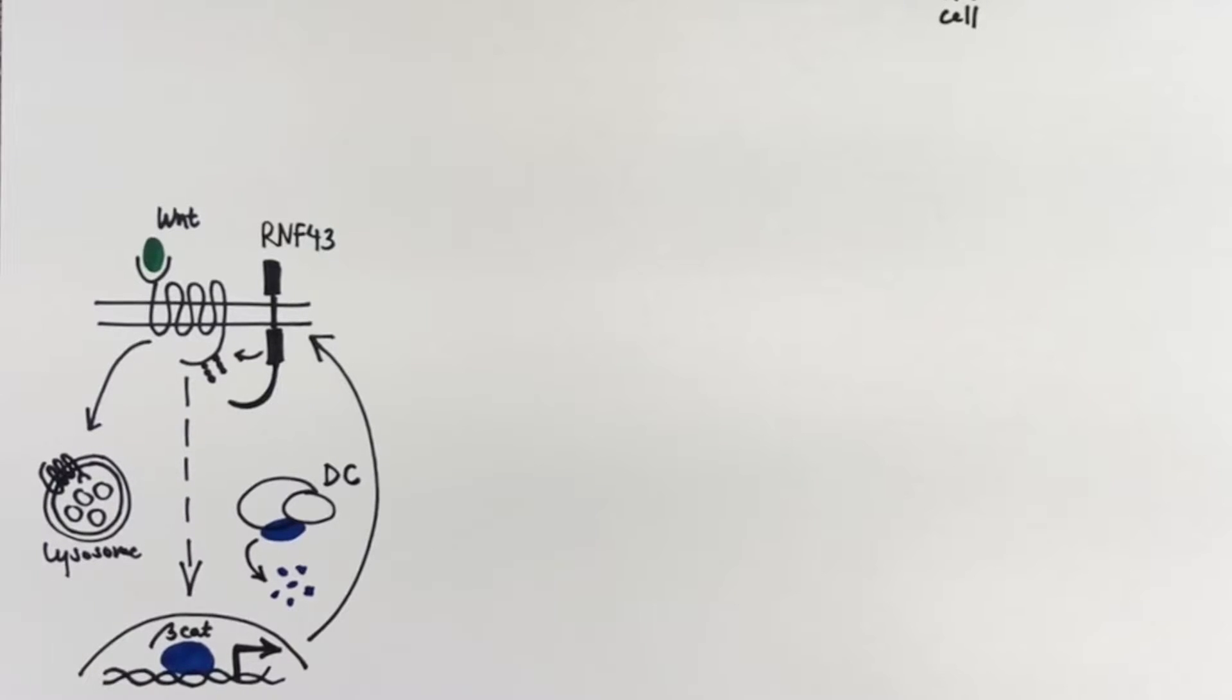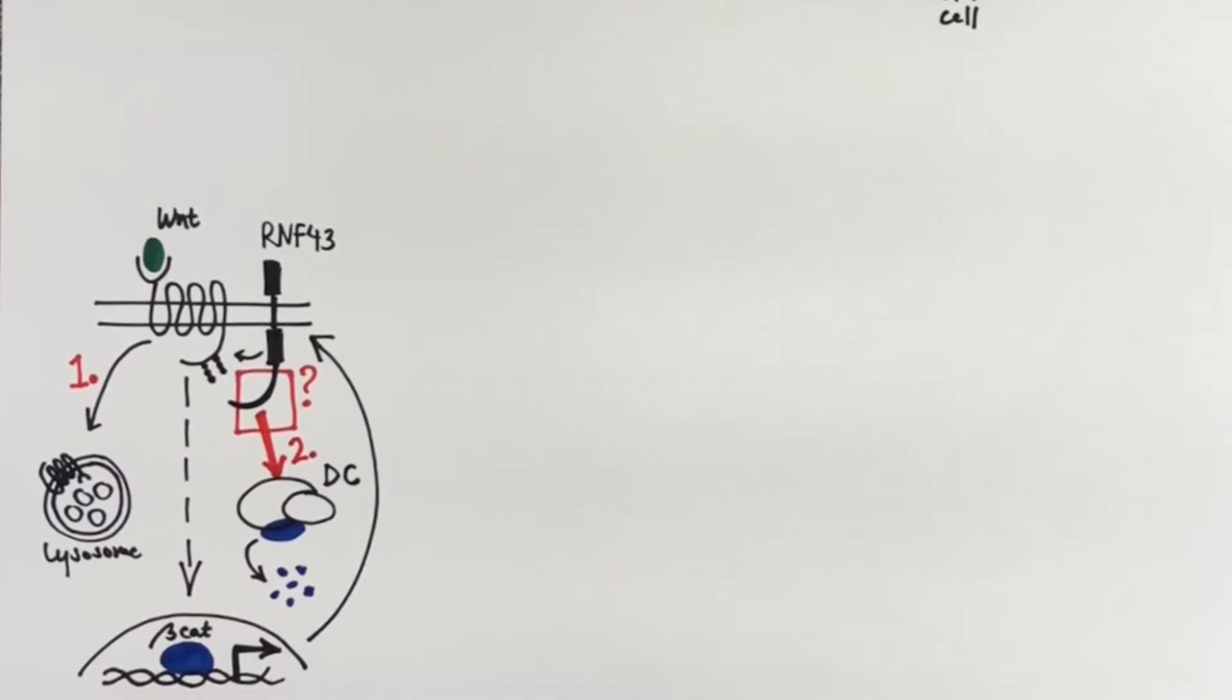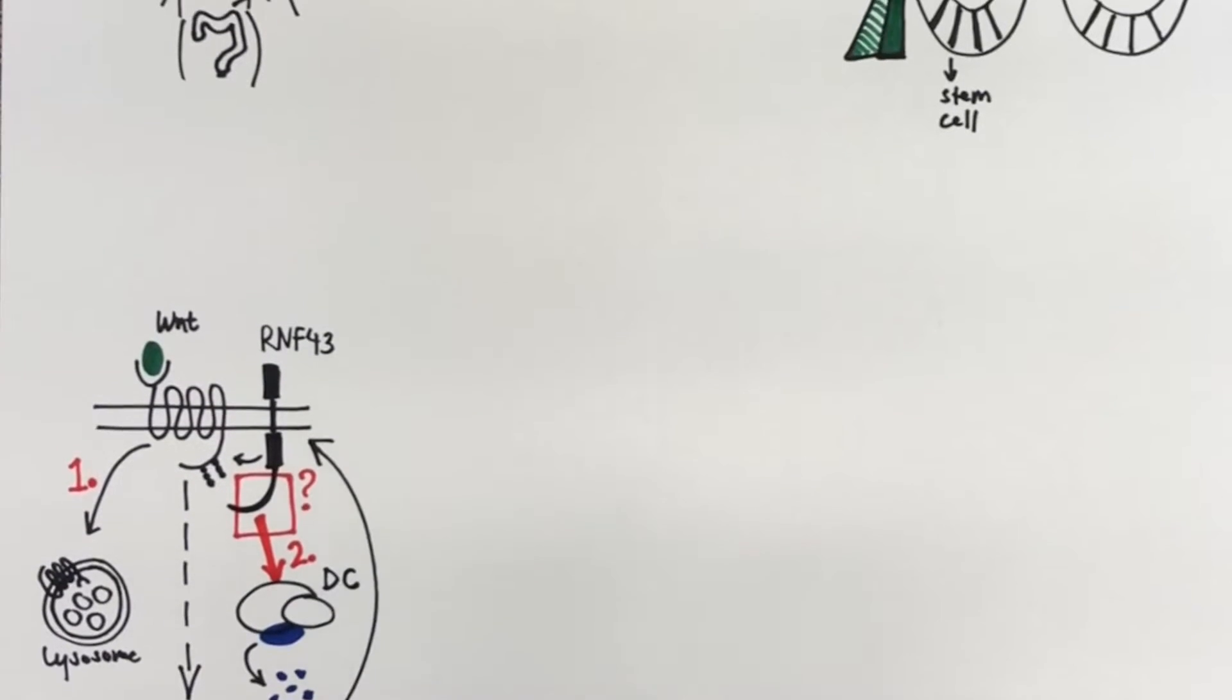The known functional domains of RNF43 are located in the N-terminal parts of the protein. So why does this protein have a large C-terminal tail? In our study, we show that besides the degradation of the Wnt receptors, the RNF43 C-terminal tail performs a second tumor suppressor role by interacting with and regulating the beta-catenin destruction complex.